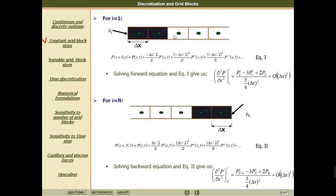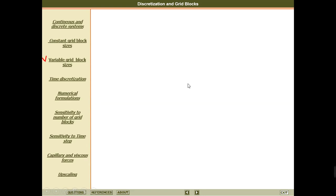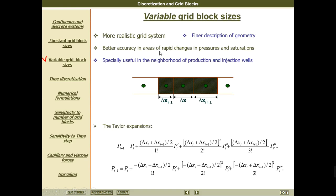In the previous example, we talked about uniform grid blocks where the grid block sizes are the same. But when we go for the realistic case, or when we talk about better geometry of the reservoir, the grid blocks may not be the same.